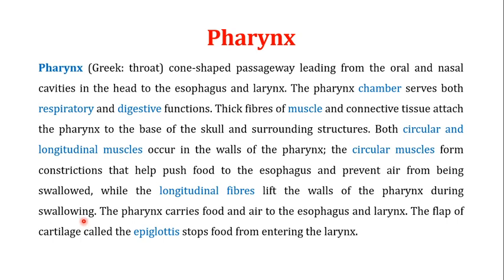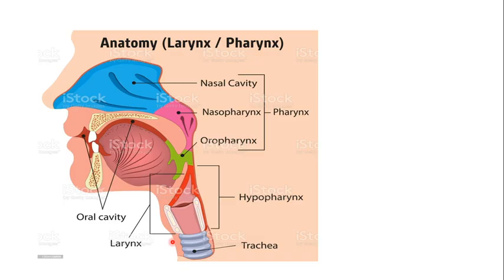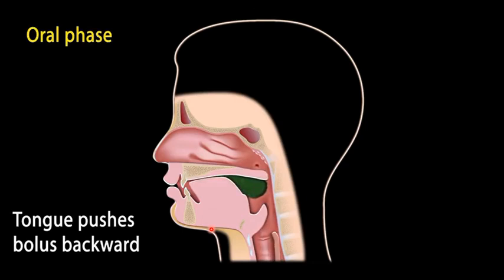The pharynx carries food and air to the esophagus and larynx, but there is a flap of cartilage called the epiglottis that actually stops food from entering the larynx. The pharynx is subdivided into three major portions: the oropharynx, which you can see in this particular area; the nasopharynx, which prevents the entry of food into the nasal cavity; and the hypopharynx, which is present in this particular area.